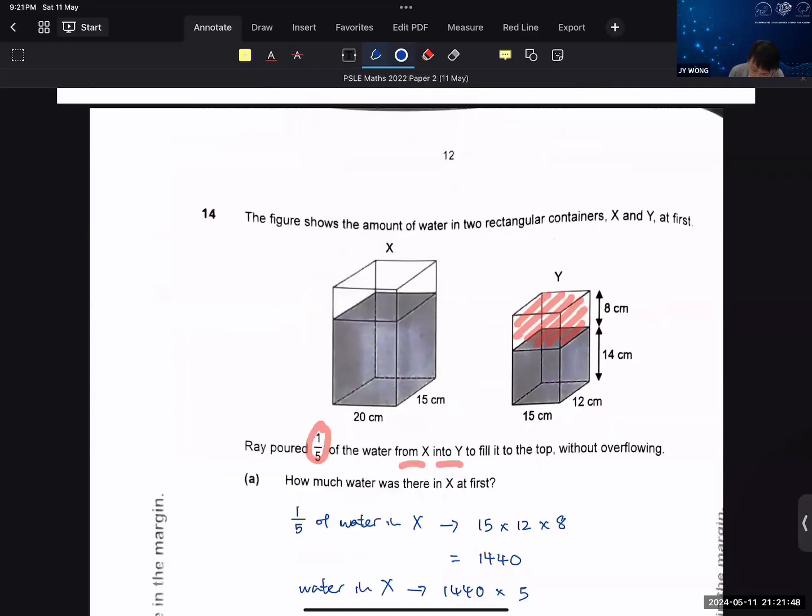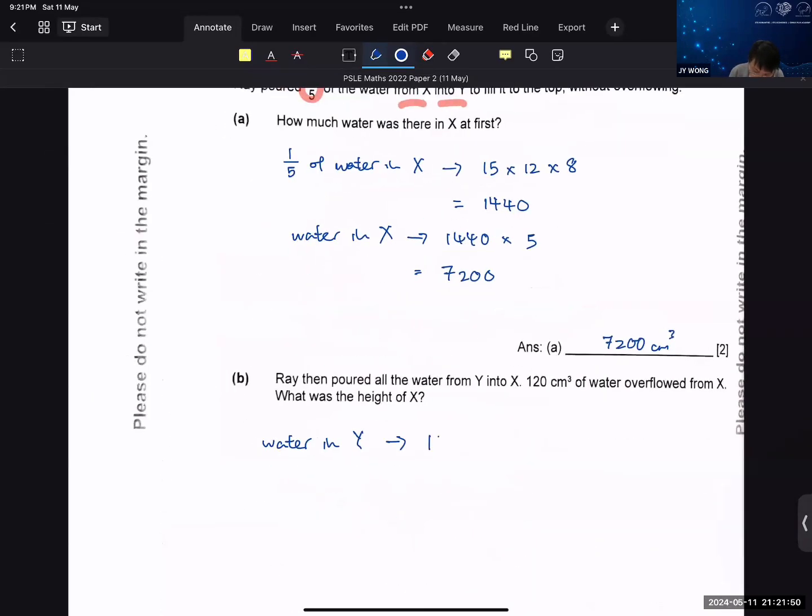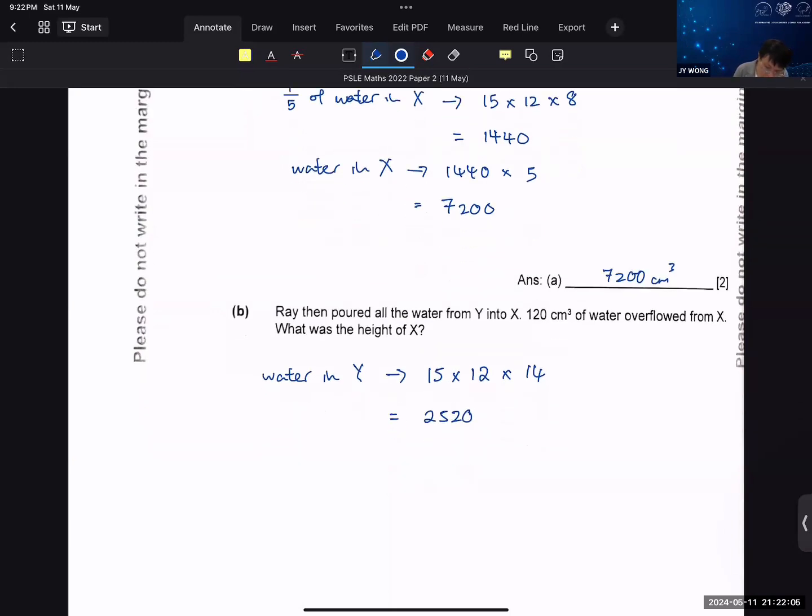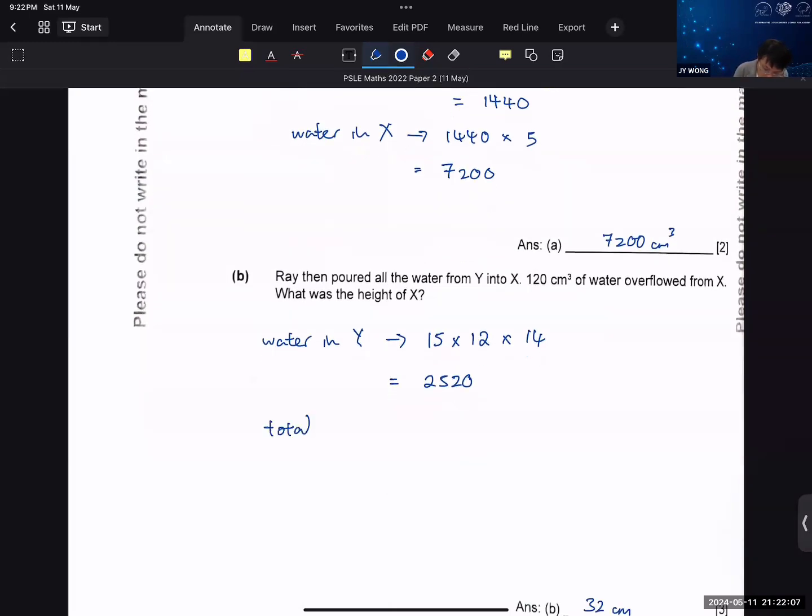Water in Y at first is 15 times 12 times 14. Right? So 2520. And then from here, you can find the total water. Your total amount of water is 2520 plus 7200, which will give you 9720.